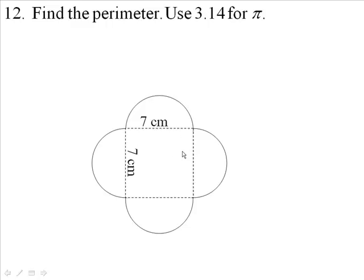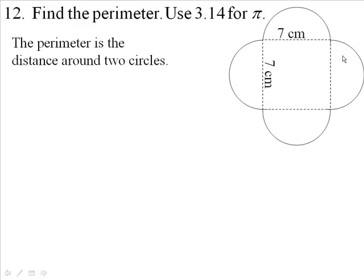So what I want to do is find the circumference for two circles. Well, the diameter is 7. That's the distance across one circle. The diameter is 7.